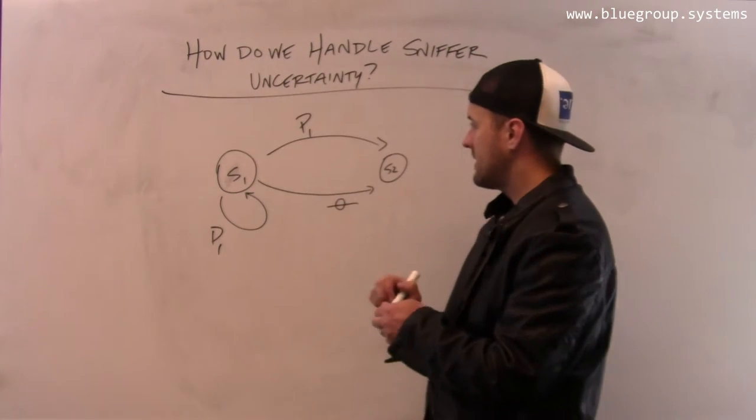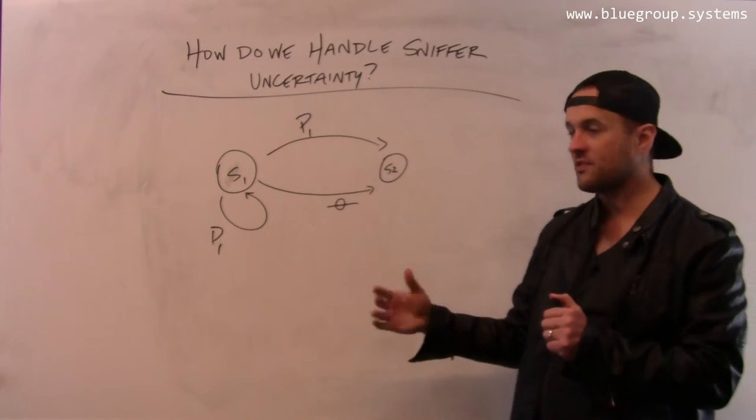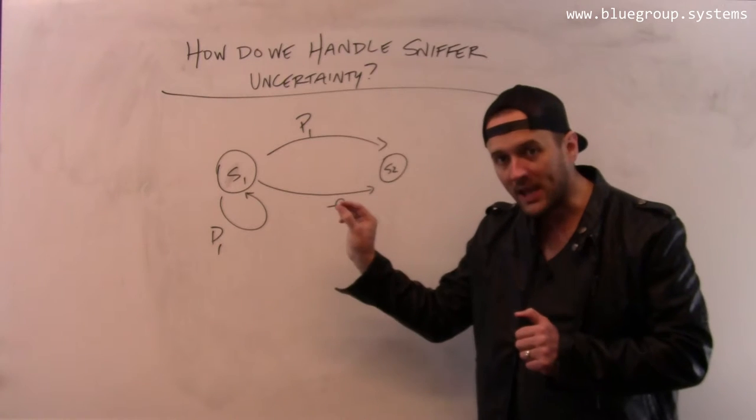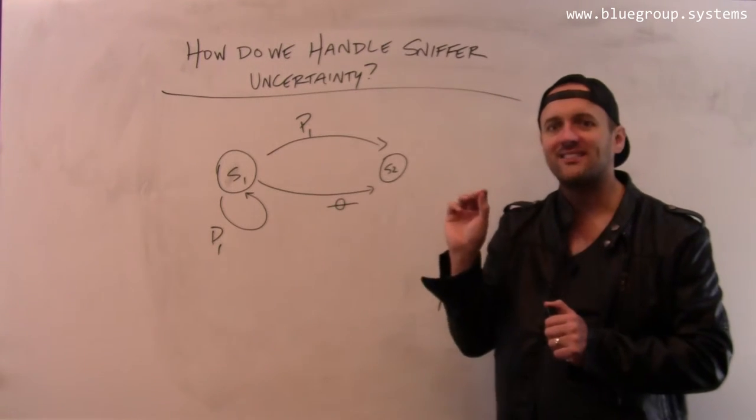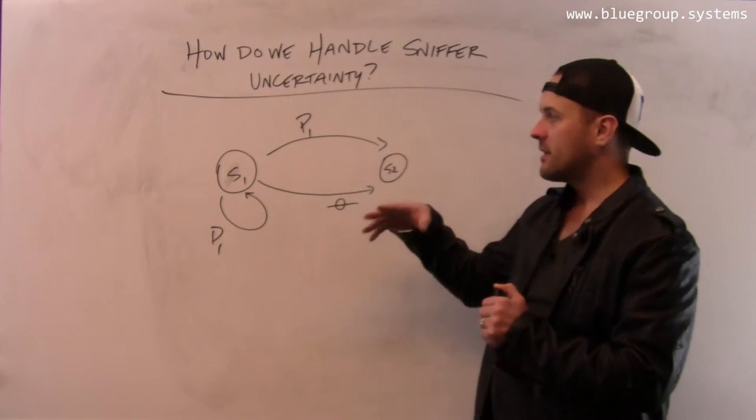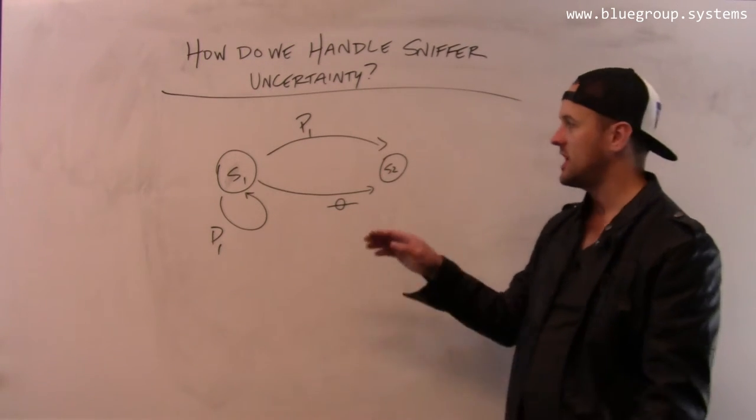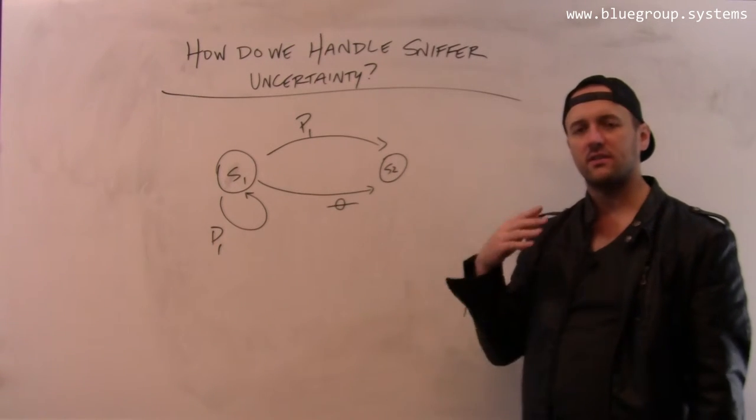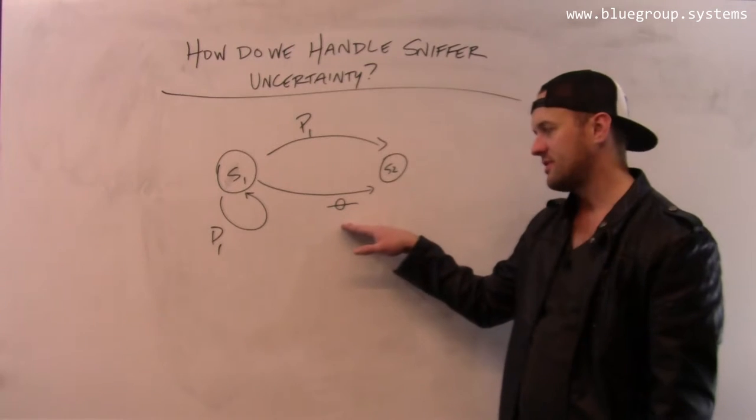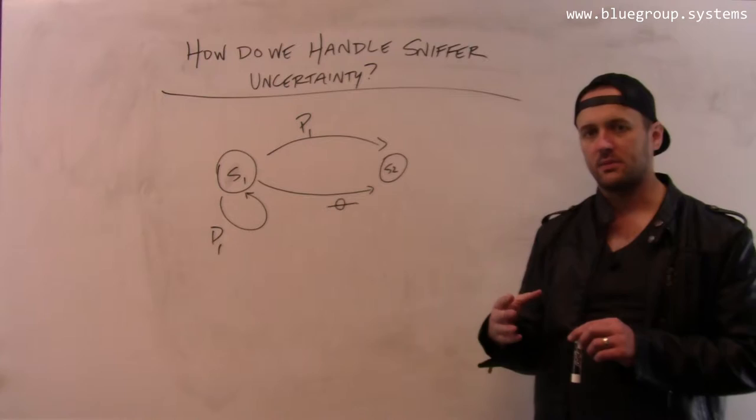It's also possible that the sniffer saw P1, but the device under test didn't. And so it stayed in S1. And so there is a programmatic and mechanical way that I can take this original state machine and look for various transitions that result from receiving packets and introduce these null transitions and these self-transitions that incorporate the uncertainty in the sniffer's measurements.